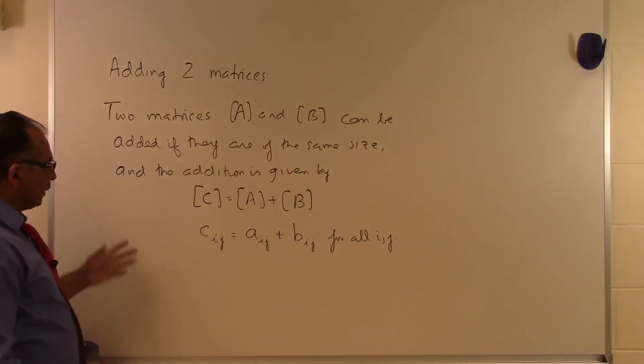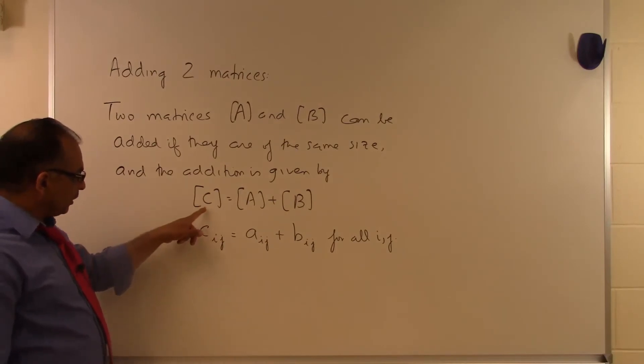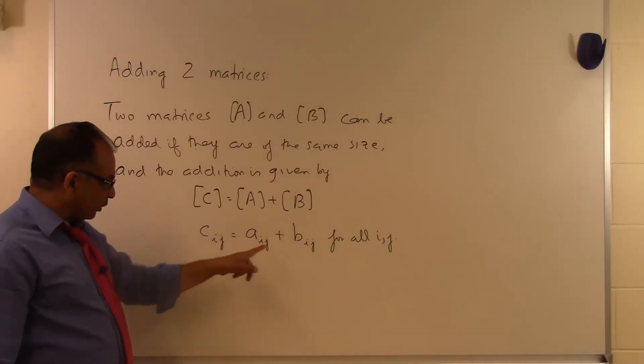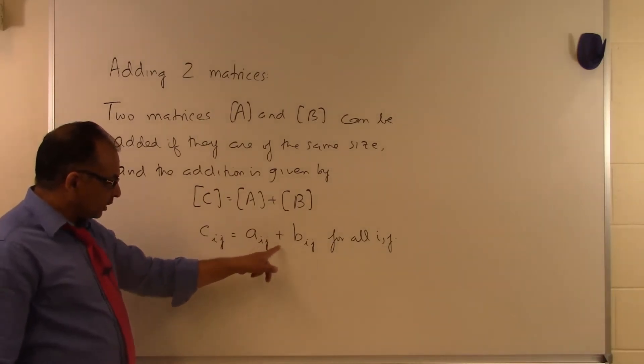So two things: A and B have to be the same size, and then how do we get the elements of the C matrix? The addition of the two matrices is done by taking corresponding i,jth elements. We get the C_ij element by adding the A_ij element and the B_ij element together.